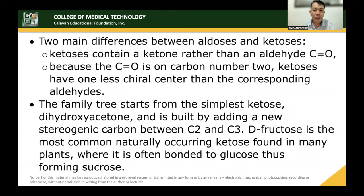There are two main differences between aldoses and ketoses. Ketoses contain a ketone rather than an aldehyde — the C double bond O is on carbon number 2. Ketoses also have one less chiral center than the corresponding aldose, because the position of the ketone on carbon 2 means that carbon is not a chiral center. D-fructose is the most commonly naturally occurring ketose, found in many plants where it is bonded to glucose, forming sucrose.